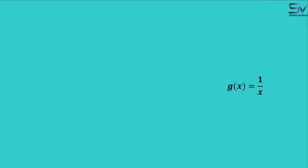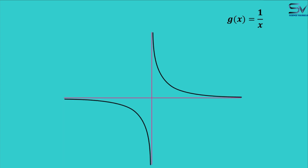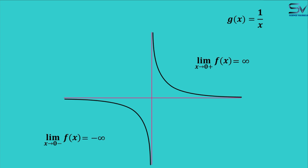Next, we see another example. You can see the function and its graph. Here we will find the limit of the function when x approaches 0. We have two ways: from the right side and from the left side — we will find the right limit and the left limit. First, the right limit: as soon as x starts approaching 0, the function is approaching infinity, which means the right limit of the function is infinity. Now the left limit: when x starts approaching 0 from the left, the function starts approaching negative infinity, which means the left limit is negative infinity.